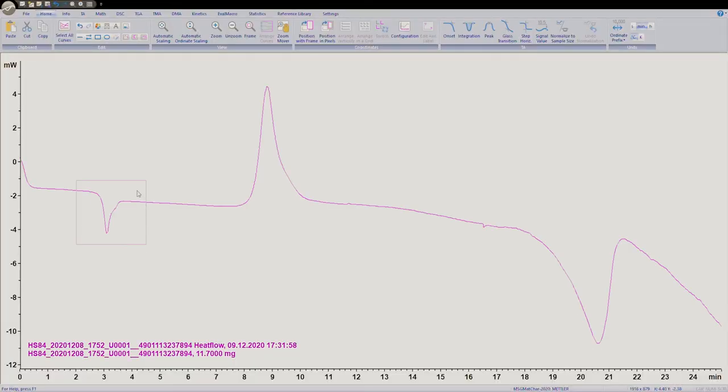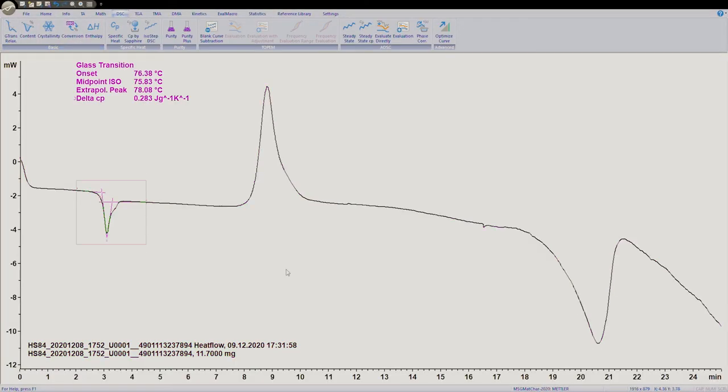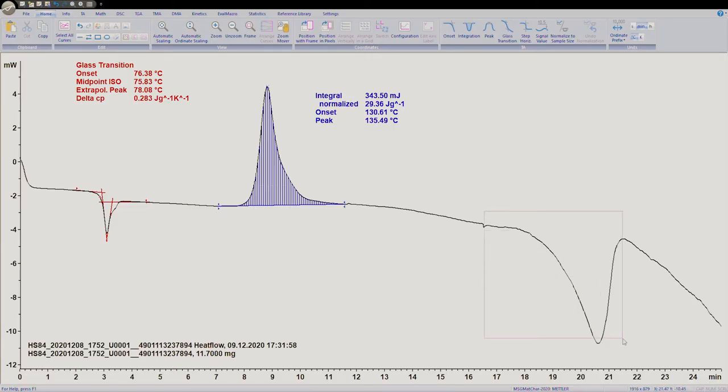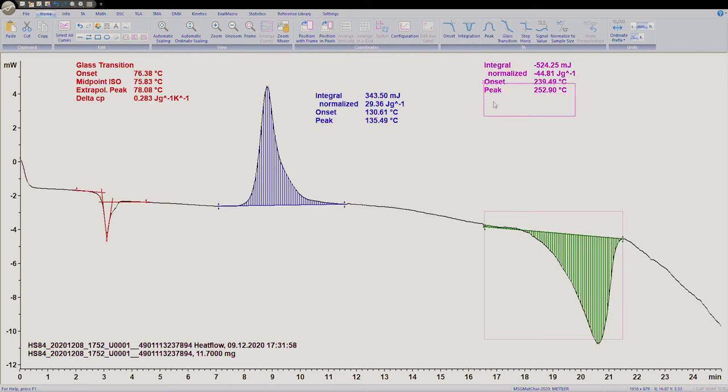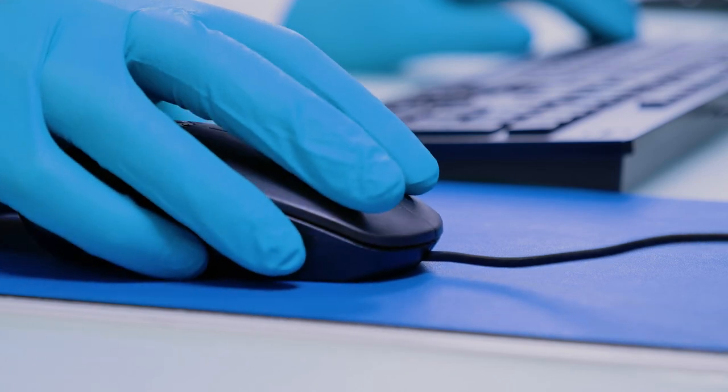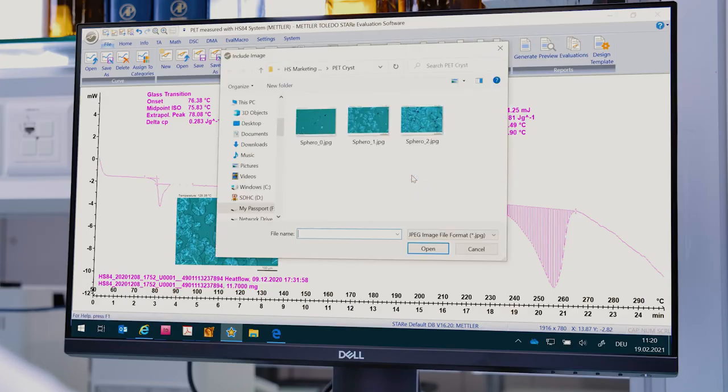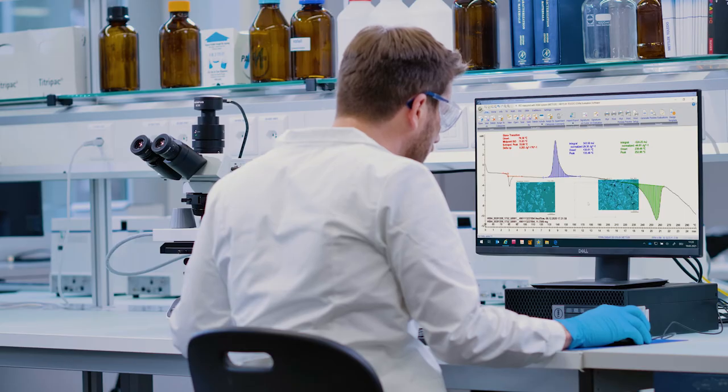The system HS84 delivers real DSC curves with correct heat flow units in milliwatts. Highlighted details support you in determining the characteristic values like onset temperatures, delta Cp values, and transition enthalpies. As an additional unique feature, the software easily allows attaching images.